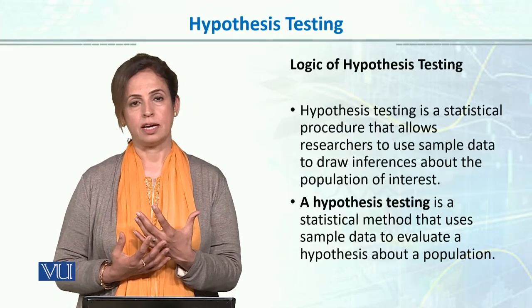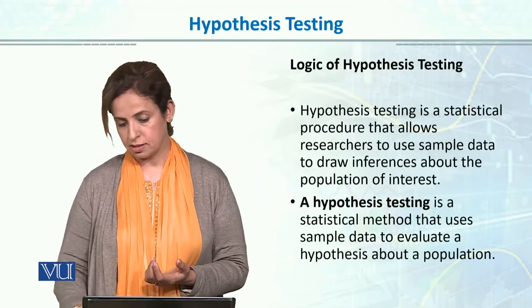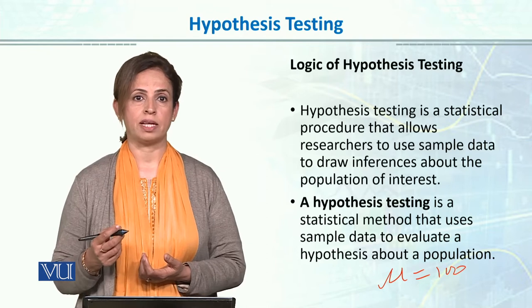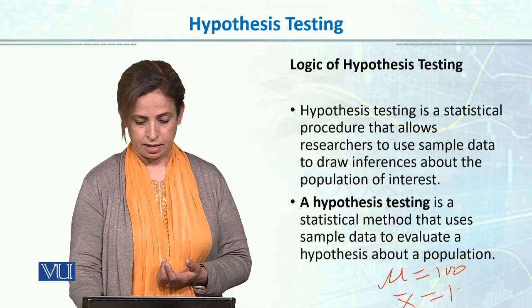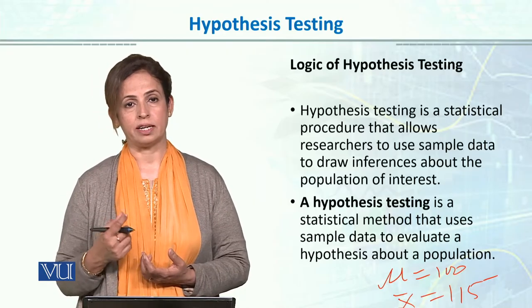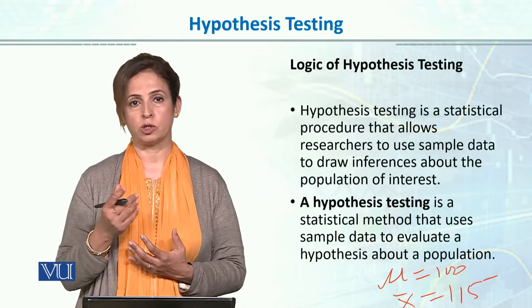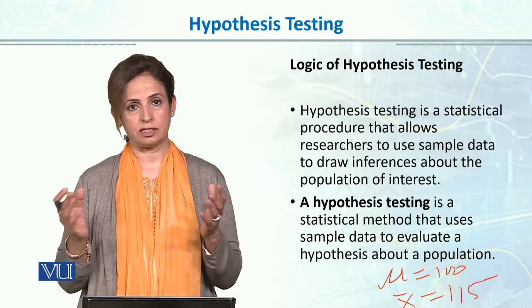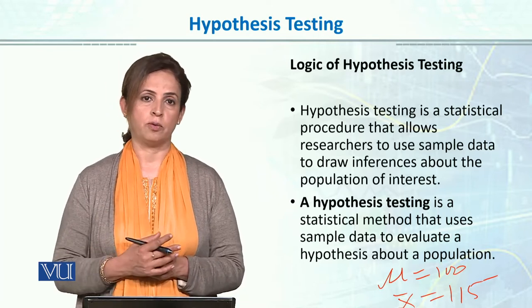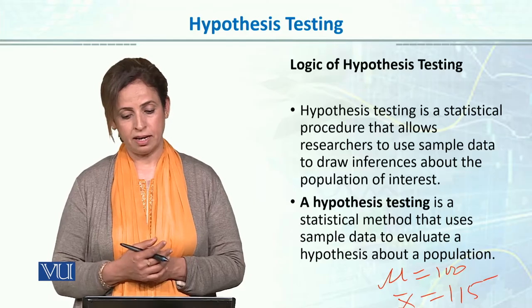We start with a neutral assumption about the population — that the overall university students' average IQ is 100, i.e., mu is equal to 100. But you collected a sample and your sample mean came out to be 115. Now how will we test what the population parameter will be? We discussed in previous lectures that studying the entire population is not possible, and we talked about how we estimate the population mean or standard deviation — either through point estimation or by making a confidence interval.